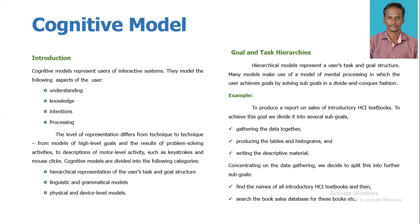The first category is hierarchical representation of user's task and goal structure. The second is linguistic and grammatical models. The third is physical and device-level models. Let us now look at the goals and task hierarchies of the cognitive model.